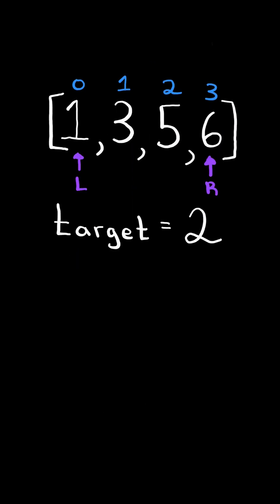First, we will have two pointers L and R at the start and end of the list. We calculate the midpoint between the indices L and R. This gives us 1.